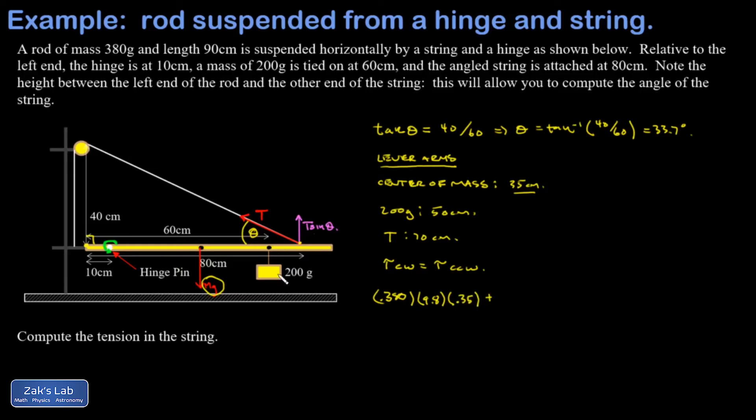And then I have another clockwise torque. It's this 200 gram mass that has gravity pulling down on it with a little MG. And I'm just going to go ahead and plug in the numbers. 200 grams is 0.200 kilograms, G = 9.8. The lever arm for that 200 gram mass was 50 centimeters or 0.5 meters. Nothing else is trying to twist this thing clockwise.